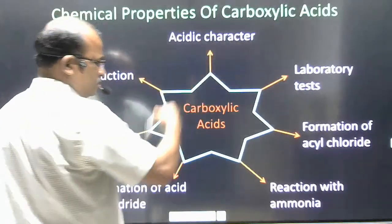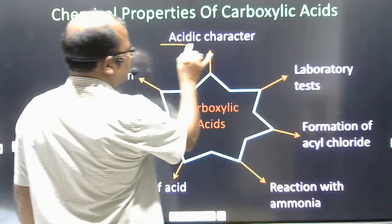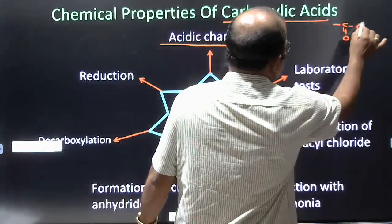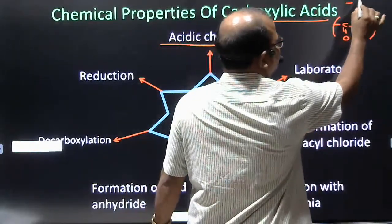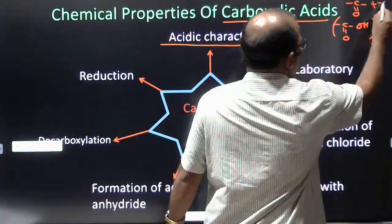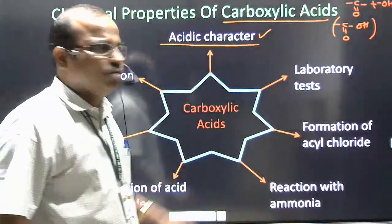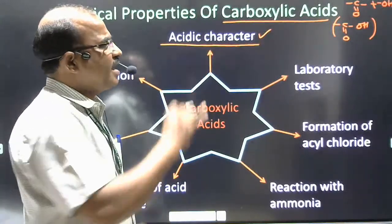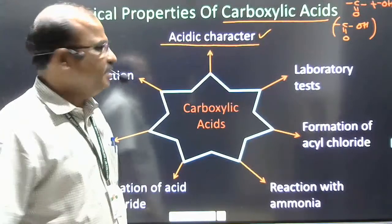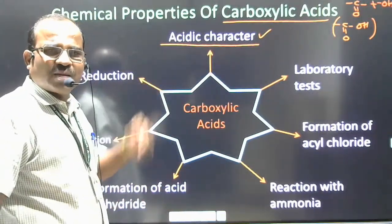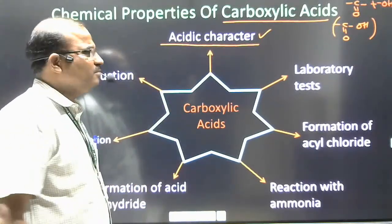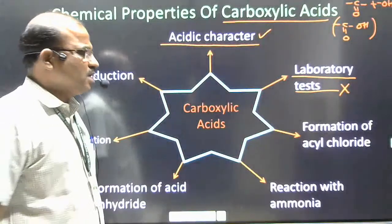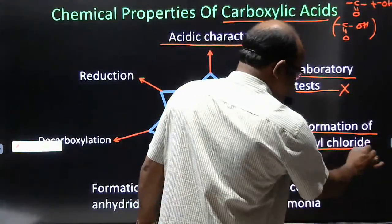In the chemical properties of carboxylic acids, we are going to see a few points. The first point is the acidic character of carboxylic acids. Carboxylic acids are compounds having a C double bond O, OH group — that is the COOH group — in their molecules. This group is formed by combination of the carbonyl group and the hydroxyl group. The laboratory tests part has been removed from the syllabus.